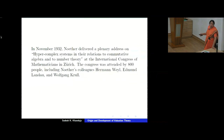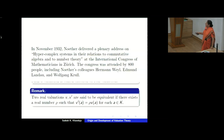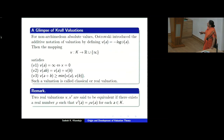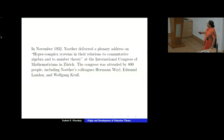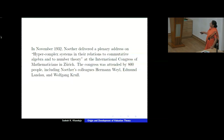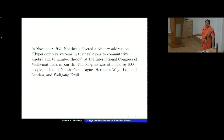In November 1932, Emmy Noether delivered a plenary address at the International Congress of Mathematicians in Zurich titled 'Hypercomplex systems in relation to commutative algebra and to number theory.' The Congress was attended by 800 people including her colleague Hermann Weyl, Admiral Lando, and Wolfgang Krull. Krull was also mentored by Emmy Noether.